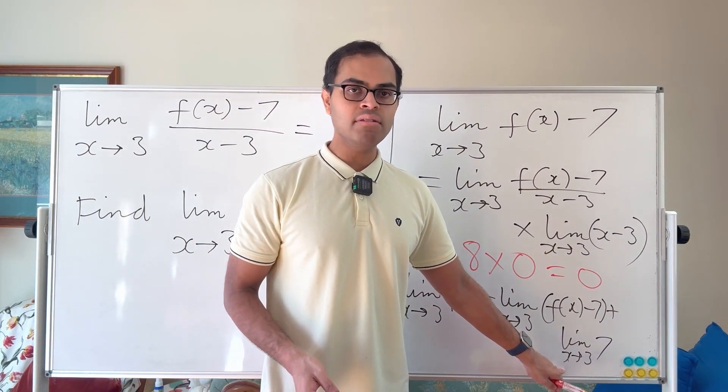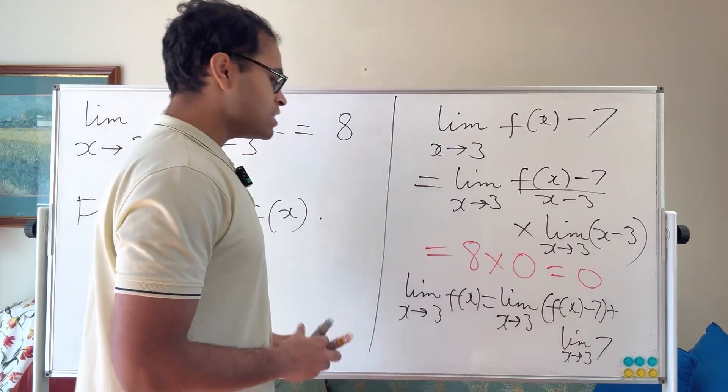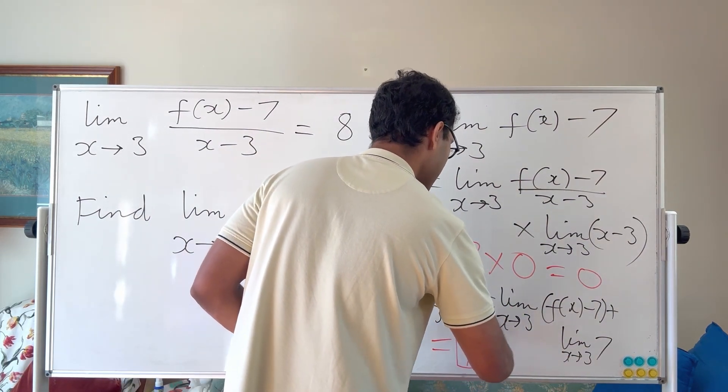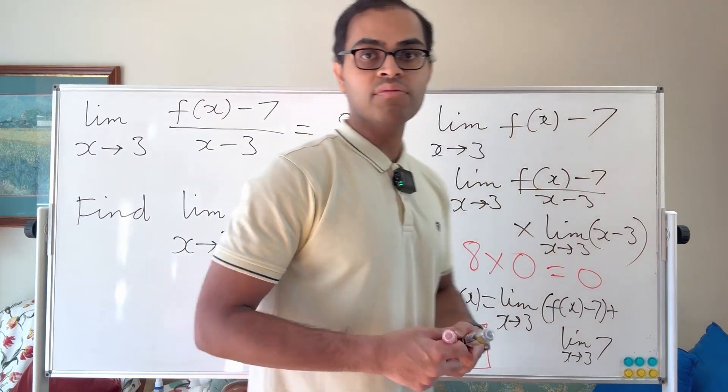This limit is going to equal 0. And limit x goes to 3 of 7, just 7. So we're just going to get 0 plus 7, which is equal to 7. So this is going to equal to 7. And that rigorously proves what we intuitively found.